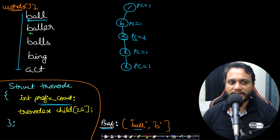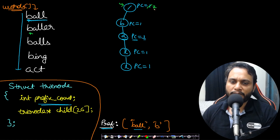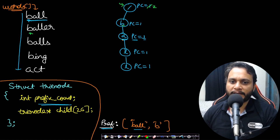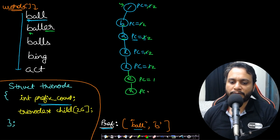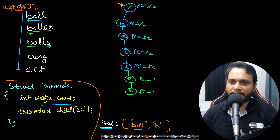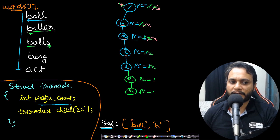Now inserting 'baller': we start at the root node and increment the prefix counter to two, meaning two words have been inserted. 'b' is already present so we increment its prefix counter to two. 'a' is present — increment. The first 'l' is present — increment. The second 'l' is present — increment. Then we insert 'e' with prefix counter one and 'r' with prefix counter one. For 'balls', we again start at root, making it three, and increment prefix counters along b, a, l, l, then insert 's' with prefix counter one.